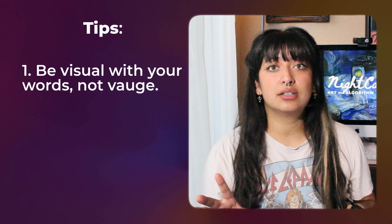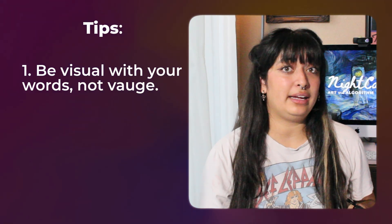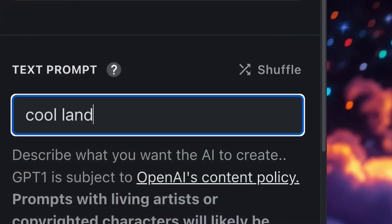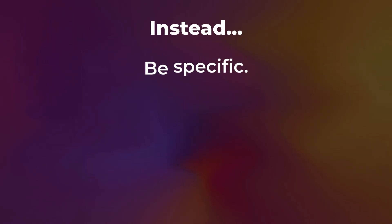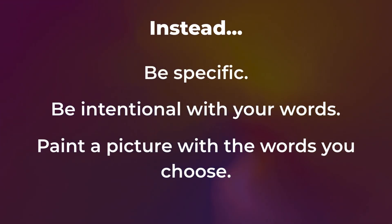When I was first getting started I had no idea what prompt writing even meant or how to put one together. First, we're gonna want to be visual and not vague. This means don't just type 'cool landscape' — instead be specific, be intentional with your words, and really paint a picture with the words that you type.